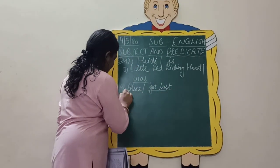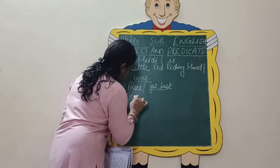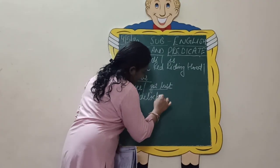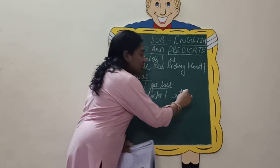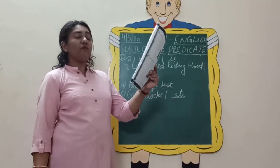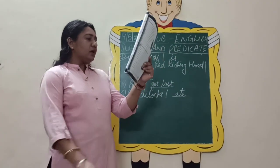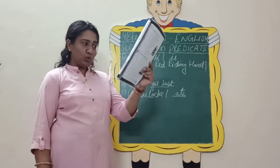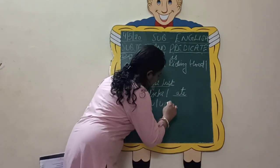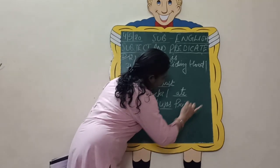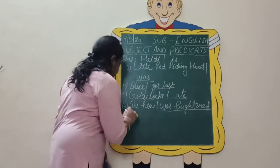'Got lost' — 'lost' is an action word, so we write 'got lost.' 'Goldilocks ate the porridge on the table' — who? Goldilocks is your subject. Separate it by drawing a line. The action of eating is going on, so 'ate' is your verb. 'The hen was frightened of the wicked fox' — who? The hen is your subject. We have a helping verb as well as a main verb: 'was frightened' is your verb.